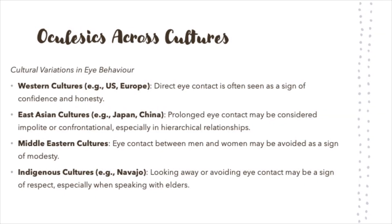It is important to remember that the way people interpret eye behavior varies widely across cultures. In many Western cultures, like the United States or most of Europe, direct eye contact is generally seen as a sign of confidence and honesty. In contrast, in East Asian cultures, like Japan or China, prolonged eye contact may be considered disrespectful or confrontational, especially in hierarchical situations such as between a boss and an employee. In some Middle Eastern cultures, eye contact between men and women is often avoided to maintain modesty.